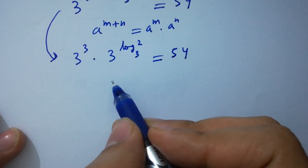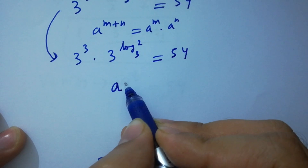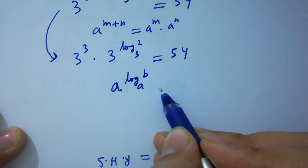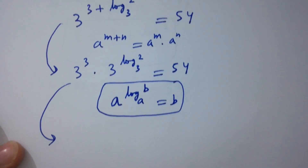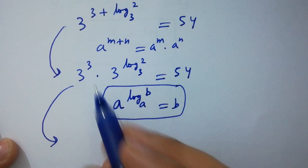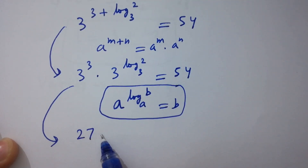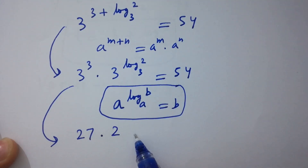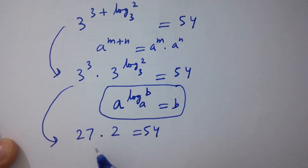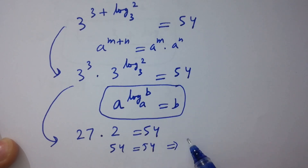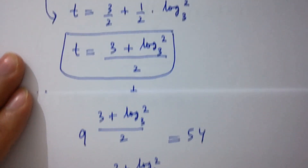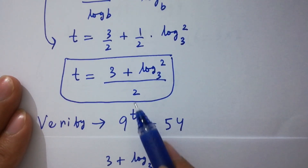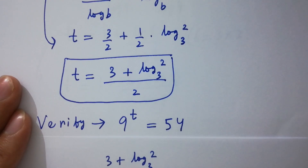Using the property a to the power log b to the base a equals b, then 3 to the power log 2 to the base 3 equals 2. Finally, 27 times 2 equals 54, and 54 equals 54. Left hand side equals 54, which shows that the value of t satisfies the equation 9 to the power t equals 54.